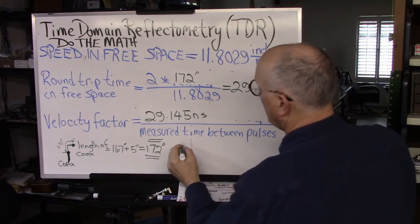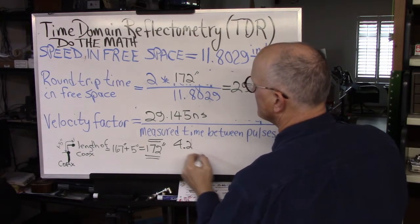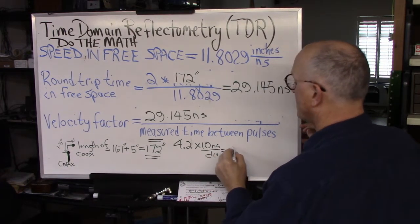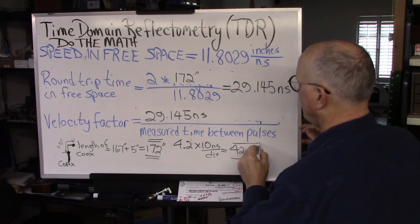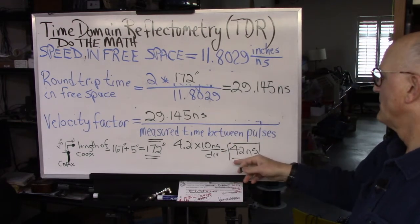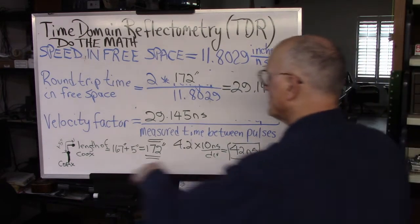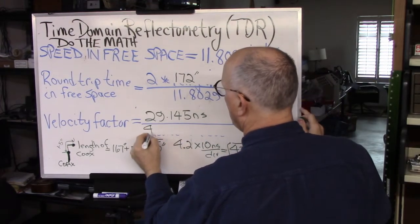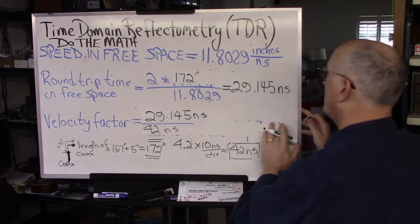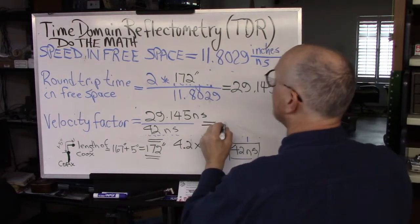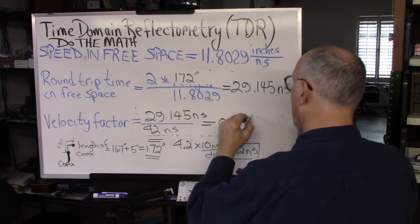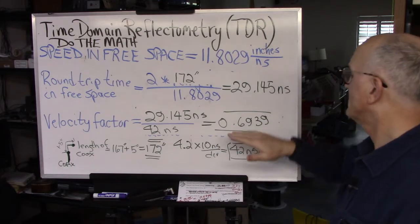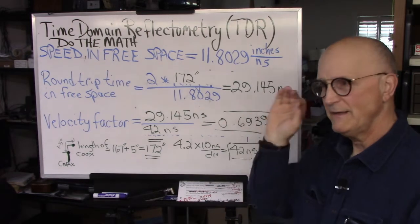Now when we did our measurement, we saw that we had 4.2 divisions, and that was 10 nanoseconds per division. So we actually measured 42 nanoseconds round trip time. So clearly it's going a lot more slowly. So let's see what that comes out. We put in here for measured time between pulses as 42 nanoseconds. We do this division, and we get a velocity factor of 0.6939.